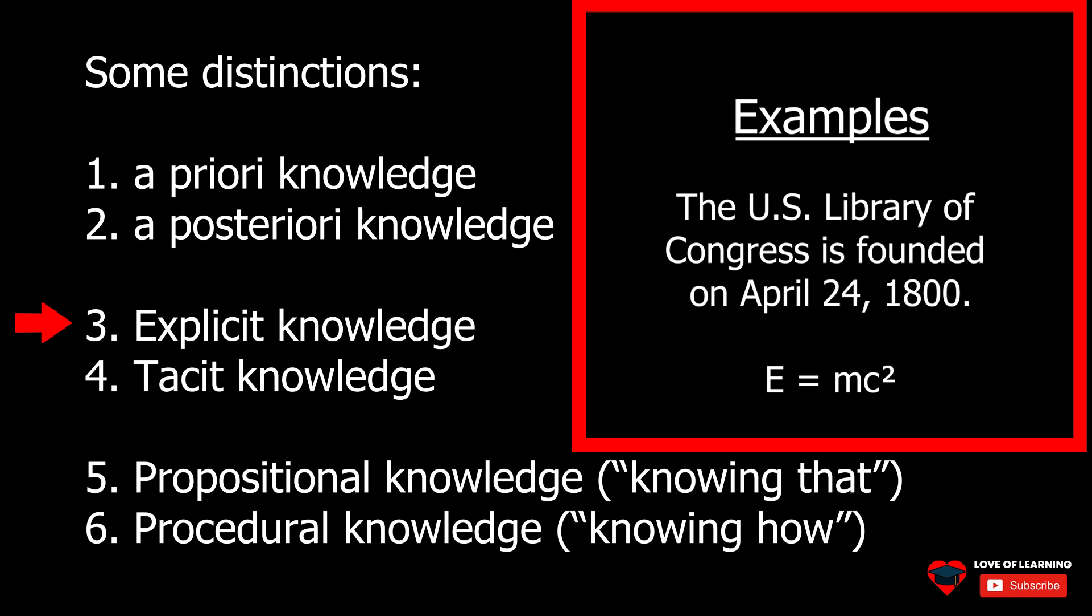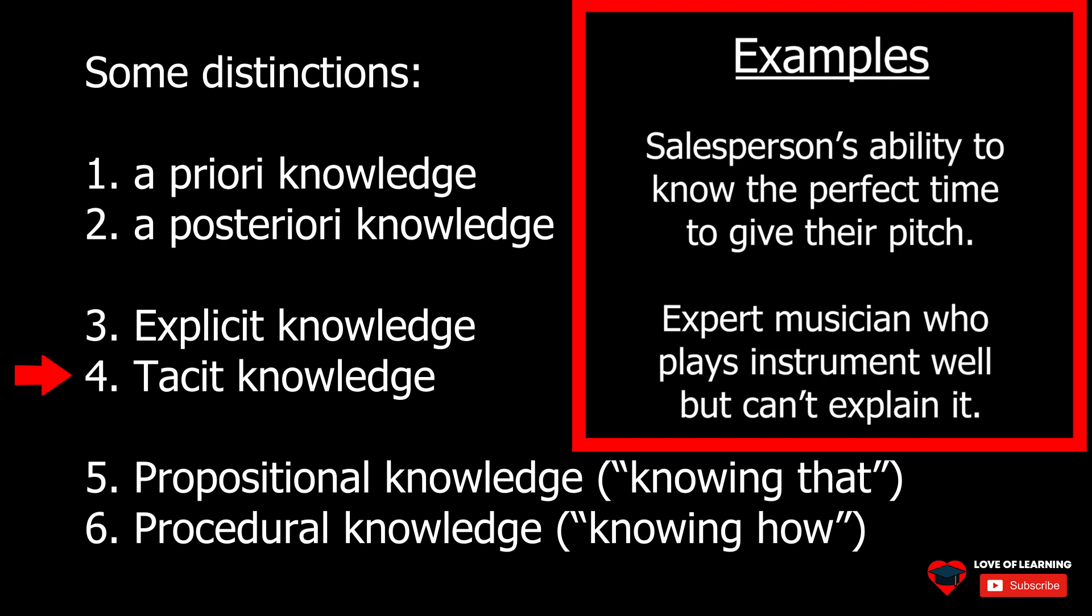Scientific laws, mathematical theorems, and historical facts, such as the United States Declaration of Independence was signed on July 4, 1776, are examples of explicit knowledge.